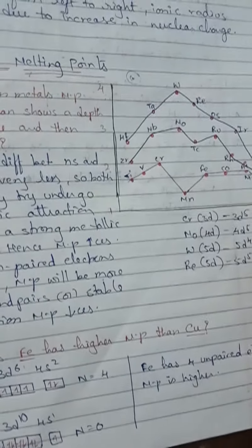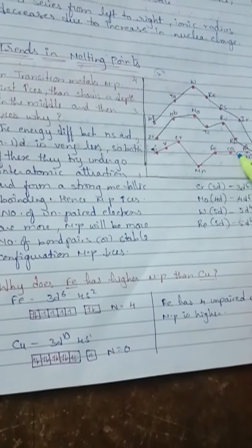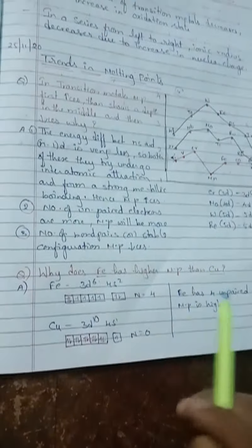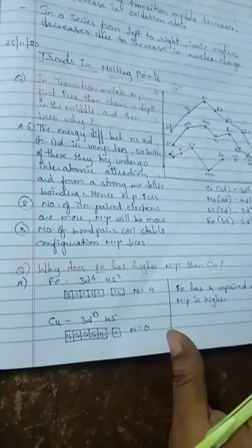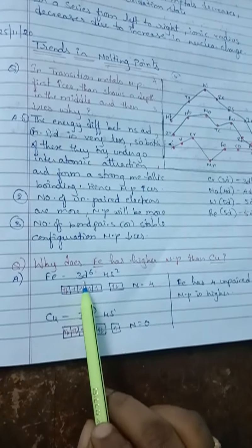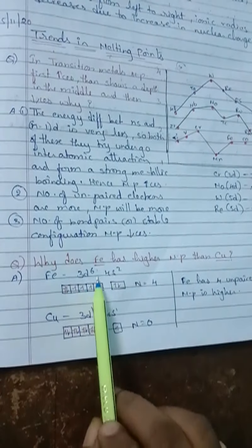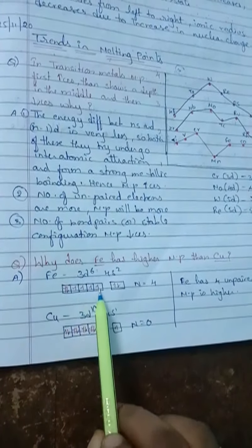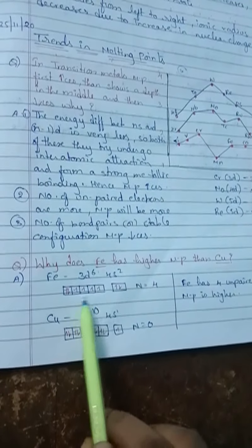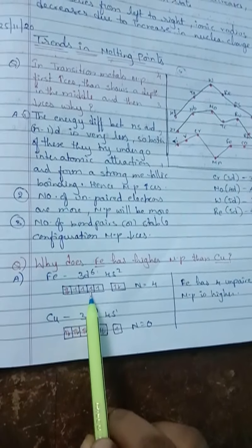The question is: why does iron have a higher melting point than copper? We have to know how many unpaired electrons there are. Iron's electronic configuration is 3D6, 4S2. In 3D6, how many unpaired electrons are there? Here 4 are there — n equals 4.